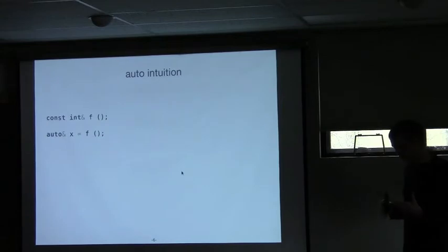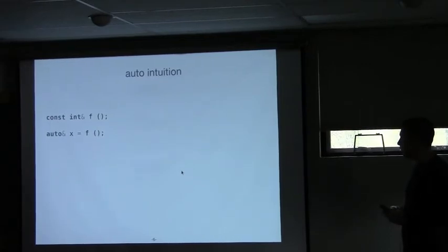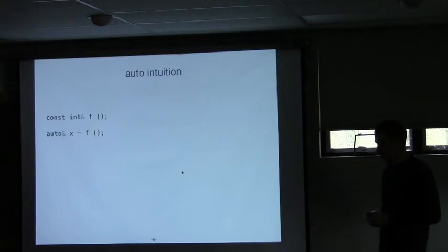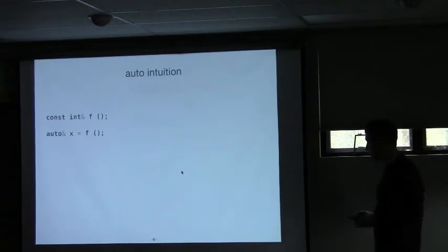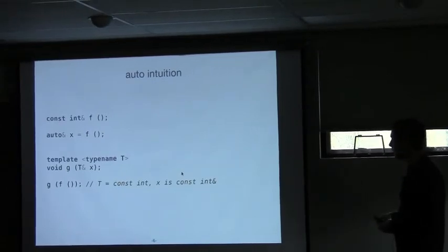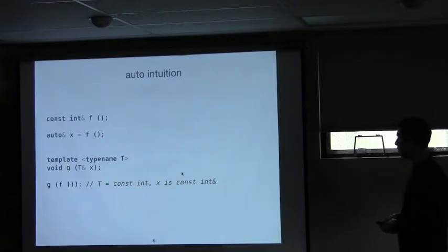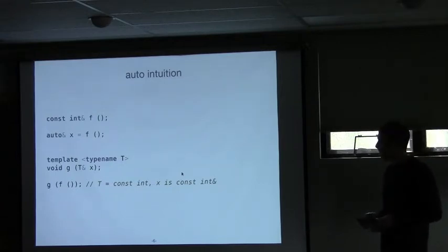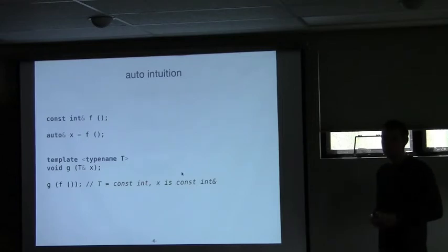Some of you noticed that this top-level reference and const stripping of auto mimics that of automatic template argument deduction. In fact, in the standard, auto is defined in terms of template argument deduction. For example, here it's not immediately obvious what type the variable x will be. But if we restate it in terms of template argument deduction, then I think most people have developed a pretty good intuition of what the deduced type will be. Most of you will be able to quickly say that T is resolved to const int and x becomes const int reference.